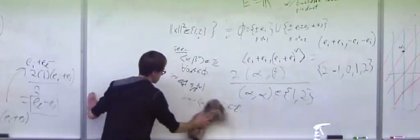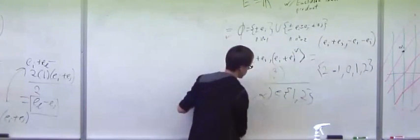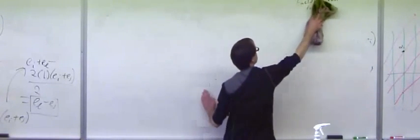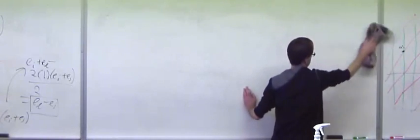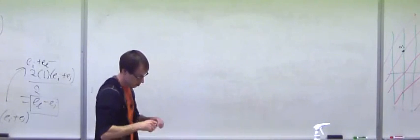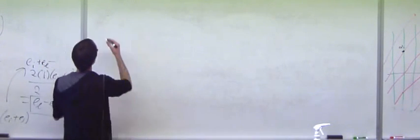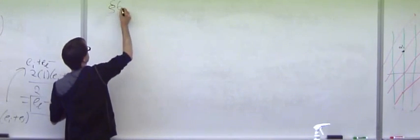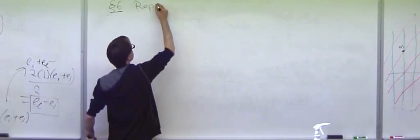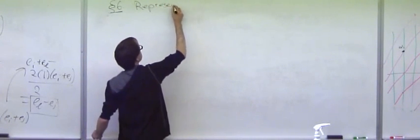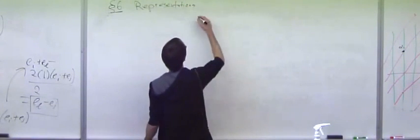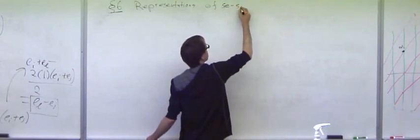So this was basically the classification of semisimple Lie algebras. And now I want to start to talk about representation theory. Remember we already learned quite a bit about representations, and then somehow we concentrated on this adjoint representation because the adjoint representation gave rise to root systems, and we use these for the classification. But let's talk in a more general setting about representations of semisimple Lie algebras.